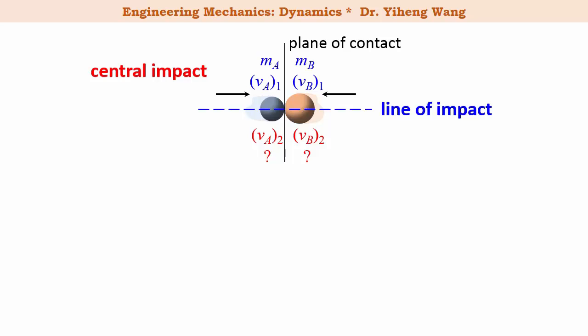To solve this problem, we will treat the two particles as one system. The impulsive forces they exert on each other are internal. There is no external impulsive force acting on the system, therefore we can apply the conservation of linear momentum on the system.